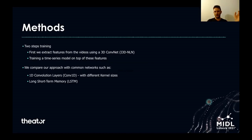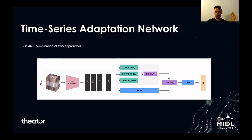Our training method has two steps. The first is feature extraction from a video using 3D convolutions — in our case, the I3D model — and then training a time series model on top of these features. For the time series model, we compare ourselves with common approaches: 1D convolution networks and LSTMs. The TASAN architecture takes the features from the video and passes them through a series of Conv1D layers, each with a different kernel size, concatenates the results, and passes them through an LSTM followed by a fully connected classification layer.